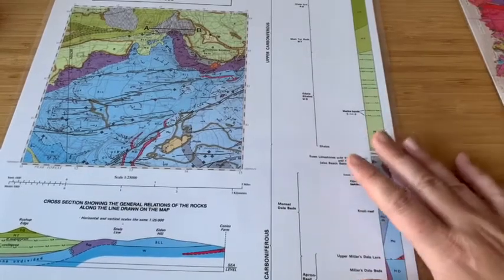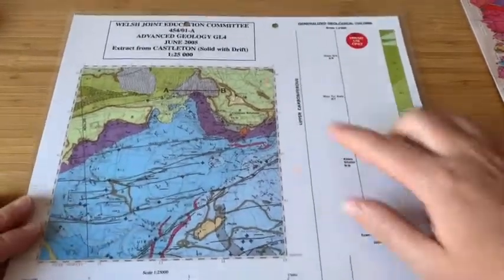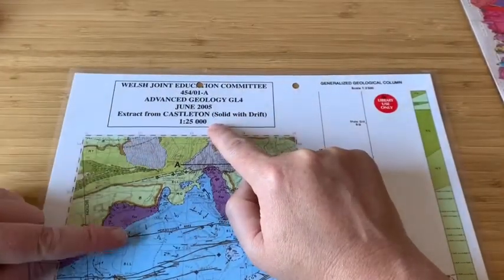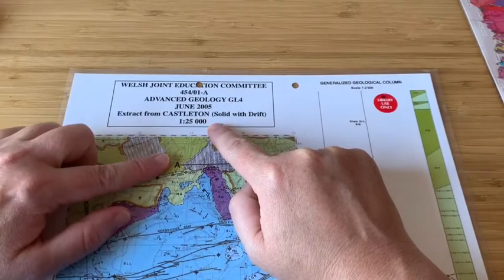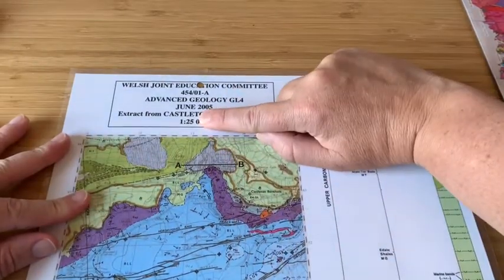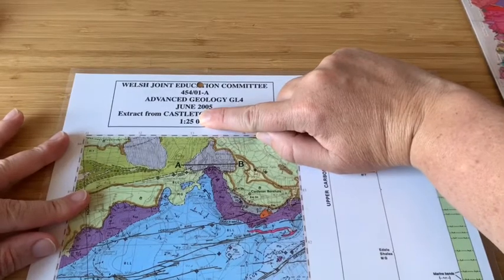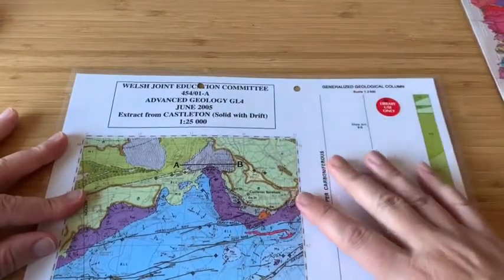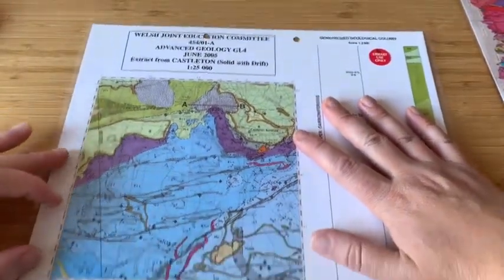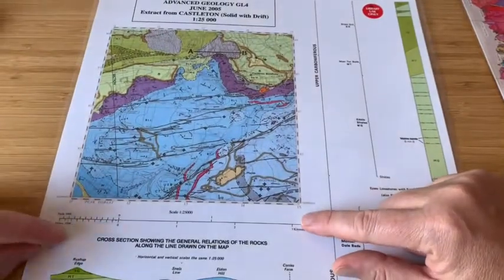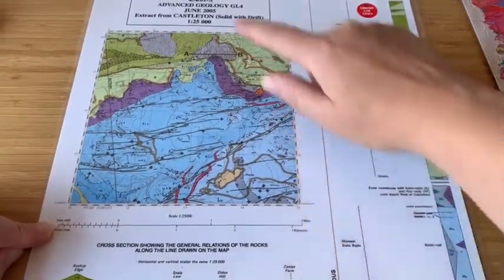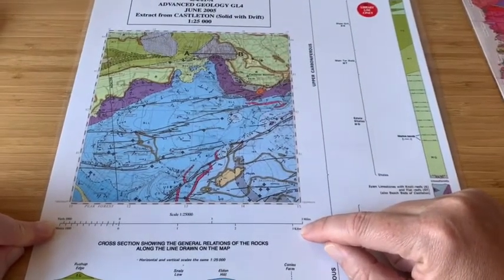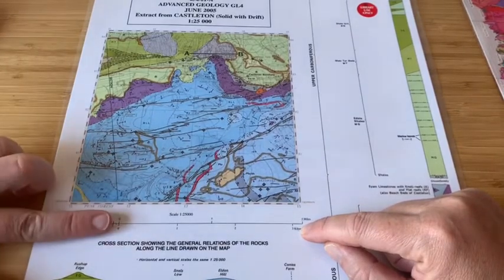At the top of the extract it tells you the scale of the geological map. This one is one centimetre on the map equivalent to 25,000 on the ground — taking off two zeros, that's one centimetre to 250 metres. Most of the maps you'll come across use that particular scale, not all but most. They also have a linear scale, but that's less precise so please ignore it.